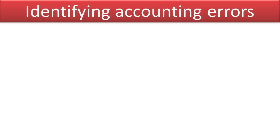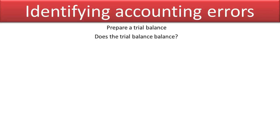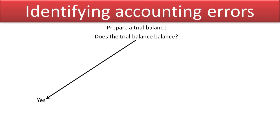What I'm going to do is introduce a decision tree as to how you can home in on these types of errors and correct them. First, you want to prepare your trial balance and ask yourself: does the trial balance balance? If the answer is yes, you can branch over and perform some analytical procedures.